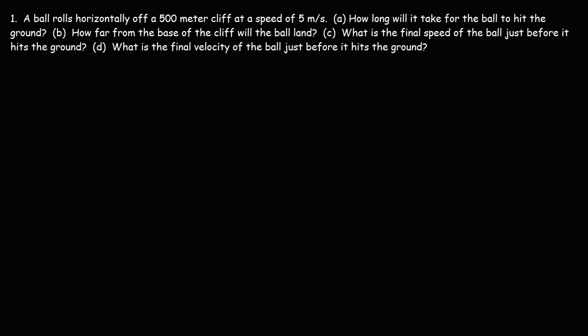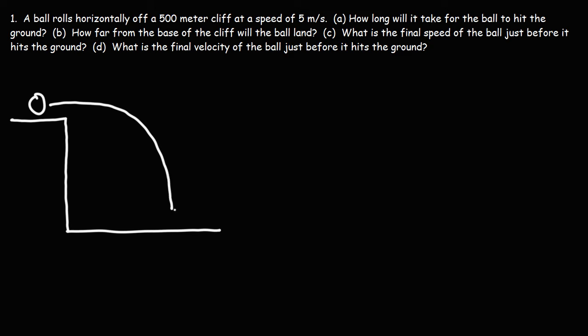In this video, we're going to work on a two-dimensional motion problem with multiple parts. A ball rolls horizontally off a 500-meter cliff at a speed of 5 meters per second. Let's begin with a picture. So this is the cliff, here is the ball, and it's going to roll off the cliff and then hit the ground.